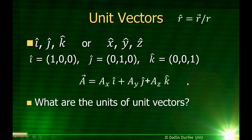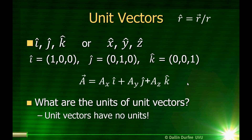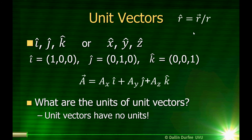Notice: what are the units of unit vectors? Unit vectors are unitless. They're 1 unit long — not 1 meter long, not 1 gauss long, not 1 meter per second long. They're just 1 unit. For example, if I wanted to find a unit vector in the r direction, I take r and divide by its magnitude. The magnitude has the same units as the vector, so when I divide them the units cancel out. Unit vectors have no units.